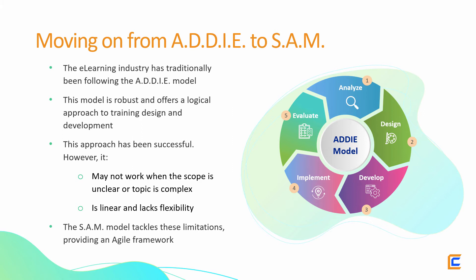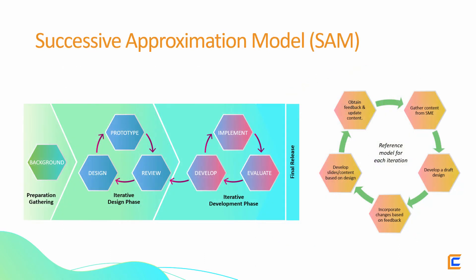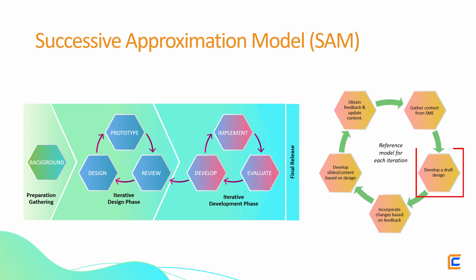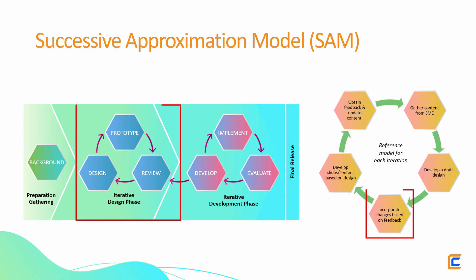The SAM model manages to address this shortcoming and provides an agile framework for developing courses. With the SAM model, you gather the required information or receive the raw content from a subject matter expert or SME, and you start designing your course. However, you don't develop the complete training design in one go. You are recommended to create a draft design for the course and then discuss it with your team or the SME. Next, based on the feedback, you continually update it until you agree to a version that aligns with your training and business goals.